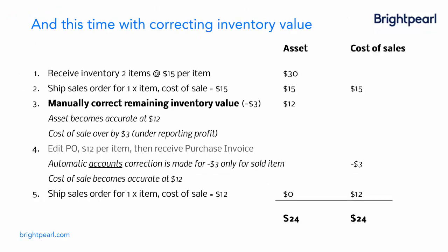This next example shows what happens when we do make a value correction. We receive inventory — two items at $15 per item — ship one item with a cost of sale of $15, and now we recognise that value is wrong. We manually correct the remaining inventory value, reducing the existing asset down to $12. Because we've sold one, we can only reduce one — that's minus $3 — so our asset now becomes correct at $12, which is great for the balance sheet or end-of-period report.